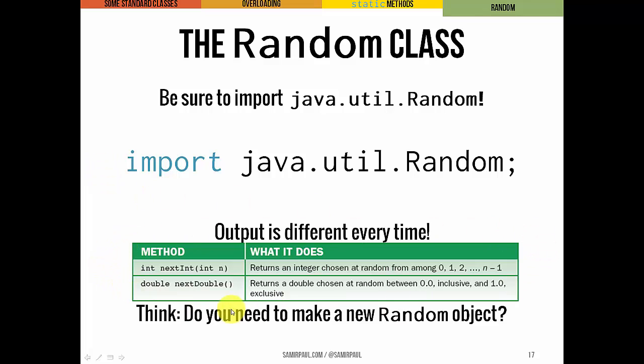These are the method signatures for two important methods of the Random class. This is int nextInt(int n). So the nextInt method takes an integer n, and it returns a random integer from 0 to n-1. So that means if I input 5,